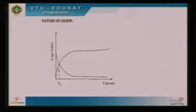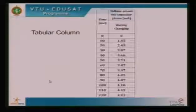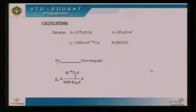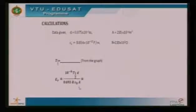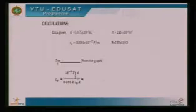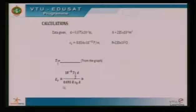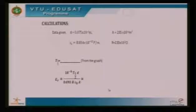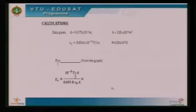The half-time value is noted from the graph and substituted into the formula: epsilon_r = (10^-6 × t_half × d) / (0.693 × R × epsilon_naught × A), where t_half is the half-time, d is the distance between the capacitor plates, R is the resistance of 220 kilo-ohm, epsilon_naught is the absolute permittivity of free space (8.54 × 10^-12 F/m), and A is the area of the capacitor plate.